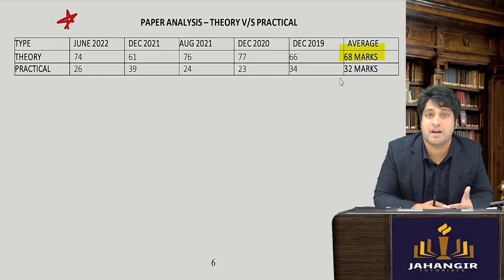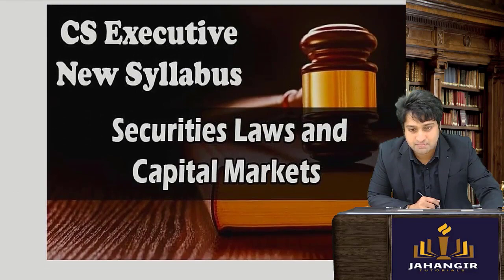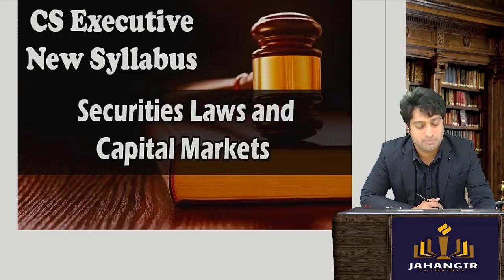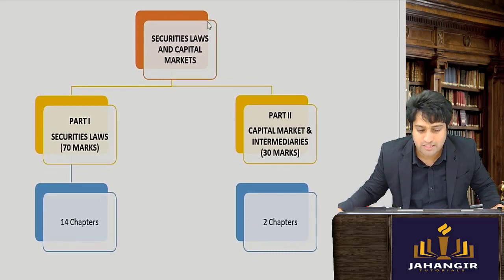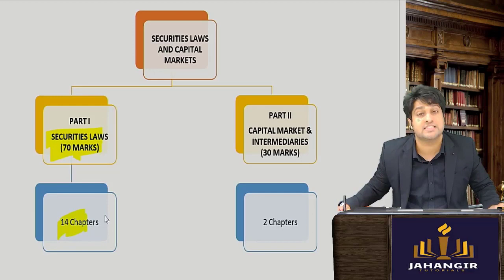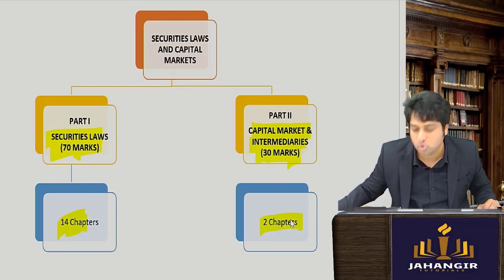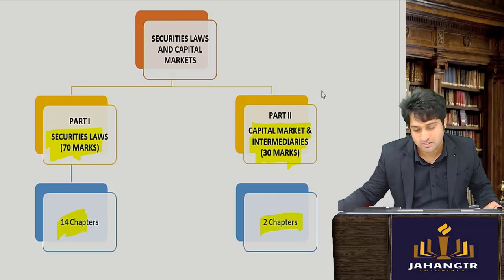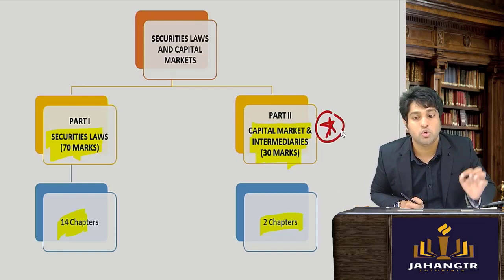Next is Securities Law and Capital Markets, which is a 400-mark subject. The chapter distribution shows Part A — Securities Law — is for 17 marks across 14 chapters, while Part B — Capital Markets and Intermediaries — is just 2 chapters carrying 30 marks. No points for guessing: Part B is the most important part, since with only two chapters you can score 30 marks with a confirmed weightage.